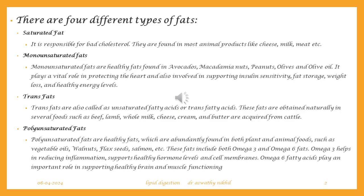Before going into lipid digestion, let us discuss 4 different types of fats. Saturated fat is considered bad cholesterol and is present in animal products like cheese, milk, and meat. Monounsaturated fats are considered somewhat healthy and are found in avocados, peanuts, and olives. Trans fats are considered the worst type of fats, present in beef, lamb, whole milk, cheese, and cream. Polyunsaturated fats are considered healthy fats — your omega-3 and omega-6 fatty acids come under this heading.